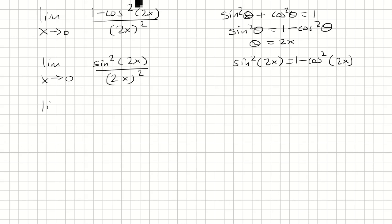And now we can factor out the exponent. We have sine 2x over 2x, and the whole thing squared, which you can even pull out outside of the limit.